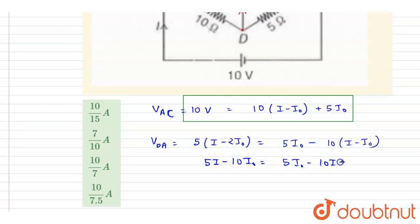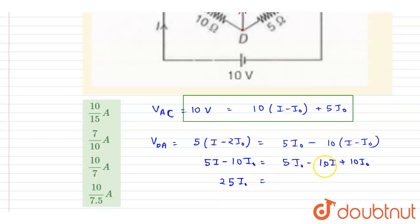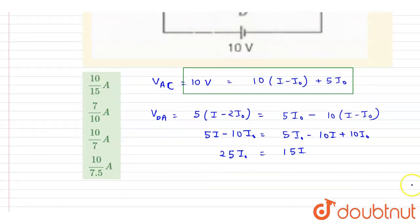Now we solve: 5i minus 10i-naught equals 5i-naught minus 10i plus 10i-naught. Collecting all i-naught terms on one side: 10 plus 5 is 15, plus 10 gives 25i-naught. Taking the i terms to the other side: we get 15i equals 25i-naught.